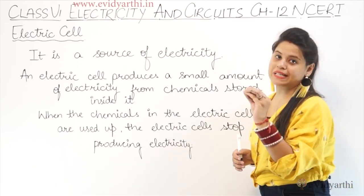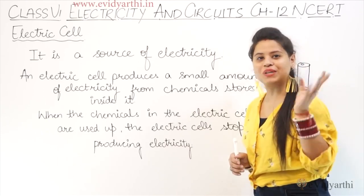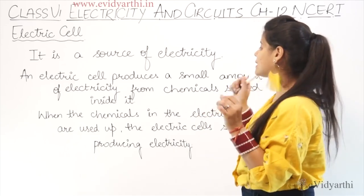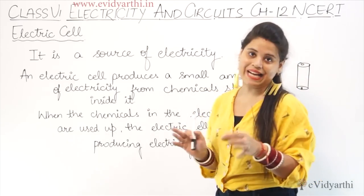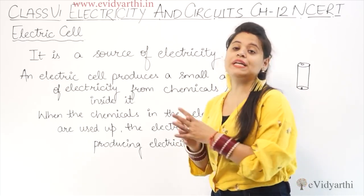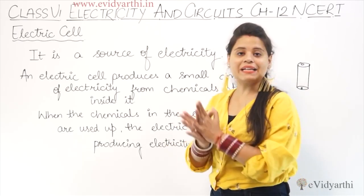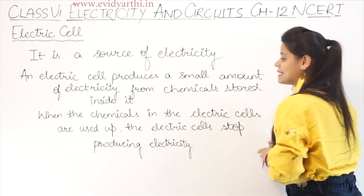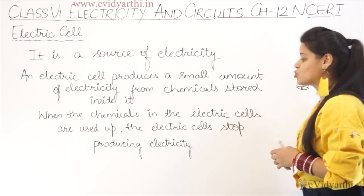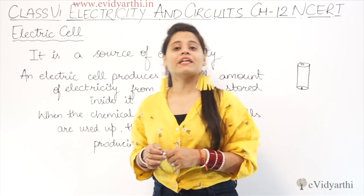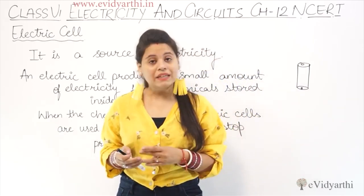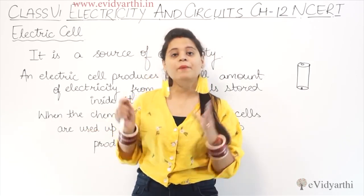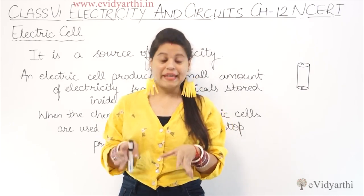So the cell creates a small amount of electricity. It's not like you can run an AC or TV on cells - that is not possible. The cell produces a small amount of electricity from chemicals stored inside it. Inside the cell, there are some chemicals that help it supply or produce electricity. When the chemicals in the electric cell are used up, the electric cell stops producing electricity. When those chemicals finish, the cell stops working.